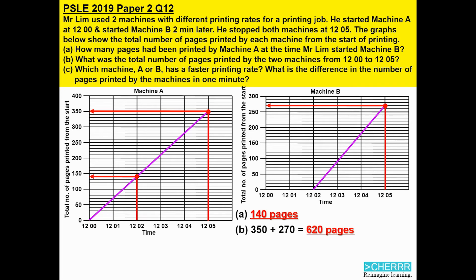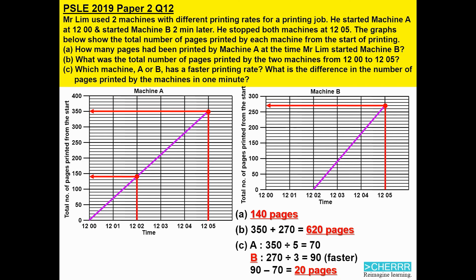To figure out which machine prints faster, we take the total number of pages and divide by the total time taken. For machine A, 350 pages printed in 5 minutes — 350 divided by 5 gives 70 pages per minute. For machine B, 270 pages printed in 3 minutes — 270 divided by 3 gives 90 pages per minute. This tells us machine B is faster. The difference is 90 minus 70, which equals 20 pages per minute.